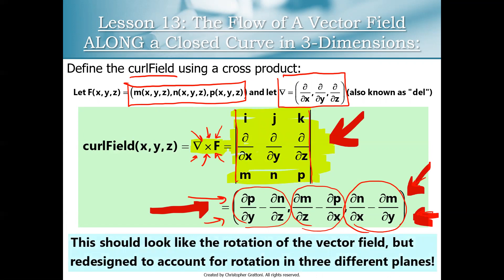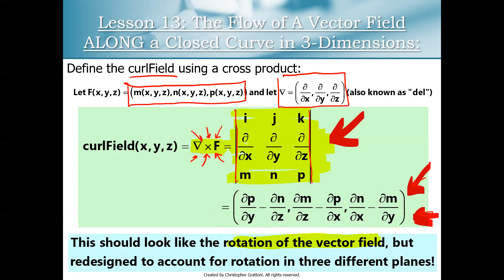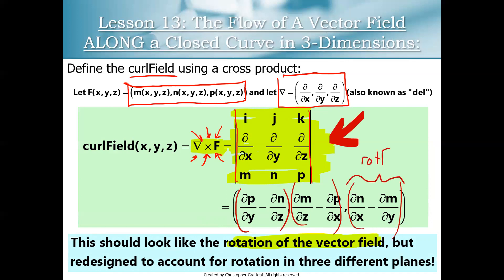One thing to notice is that the curl formula looks a lot like the rotation of a vector field from Lesson 8 — it almost looks like three different variations on the rotation formula, just happening in three different planes. The last component, dN/dx − dM/dy, looks exactly like the rotation formula from Lesson 8. The first two components are like modifications of that same formula with the letters slightly changed. That's not by accident.